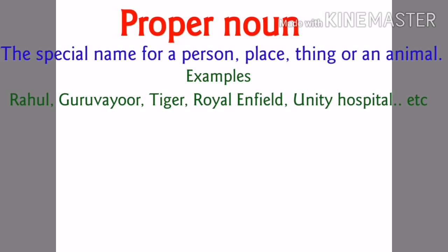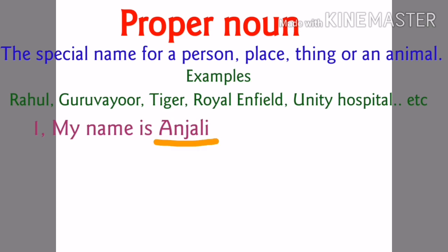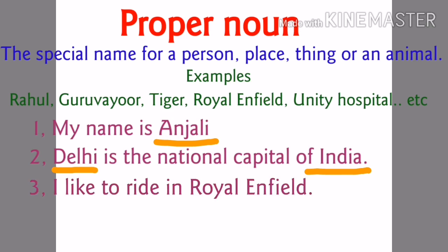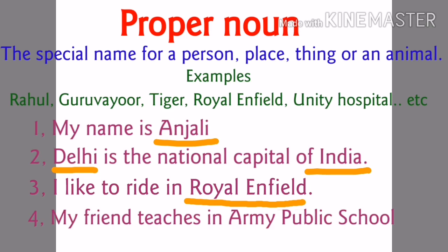Let's see the first sentence: My name is Anjali. In this sentence we can see a name of a person — Anjali — and it begins with a capital letter. Next sentence: Delhi is the national capital of India. We can see two names — Delhi and India — which are names of places and both start with a capital letter. Third sentence: I like to ride in Royal Enfield. Royal Enfield is the name of a bike. Bike is a common noun but Royal Enfield is a proper noun. Last sentence: My friend teaches in Army Public School. A school's name is mentioned — Army Public School — and it starts with a capital letter. So that is a proper noun.